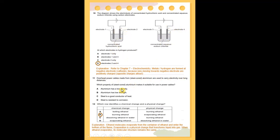Overhead power cables made from a steel core coated with aluminum are used to carry electricity over long distances. Which property of the steel core aluminum makes it suitable for use in power cables? In order for the aluminum to be suitable for power cables, it must have a low density. The answer is A.